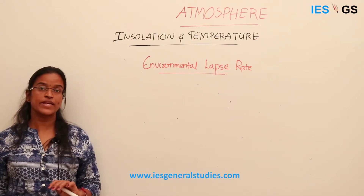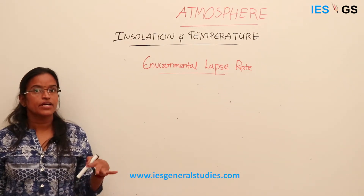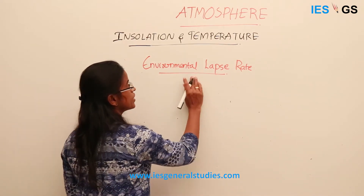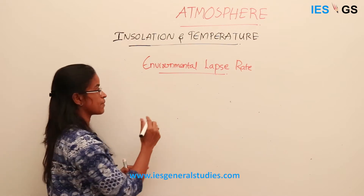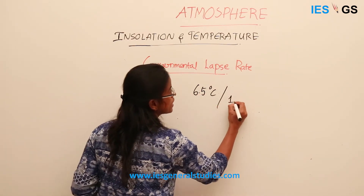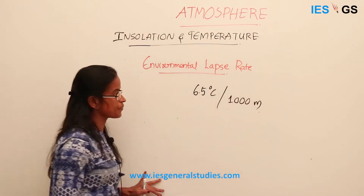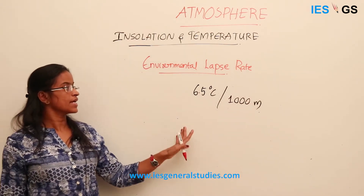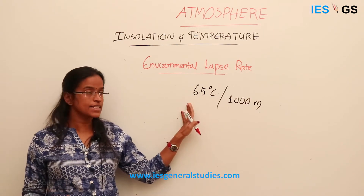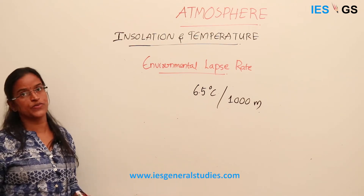We saw the distribution of temperature in the atmosphere. In the troposphere, temperature decreases with height, and this rate of decrease is called the environmental lapse rate. On average, it is about 6.5 degrees Celsius per 1000 meters, meaning the air temperature decreases by 6.5 degrees Celsius per kilometer. This is normal in the case of the troposphere.